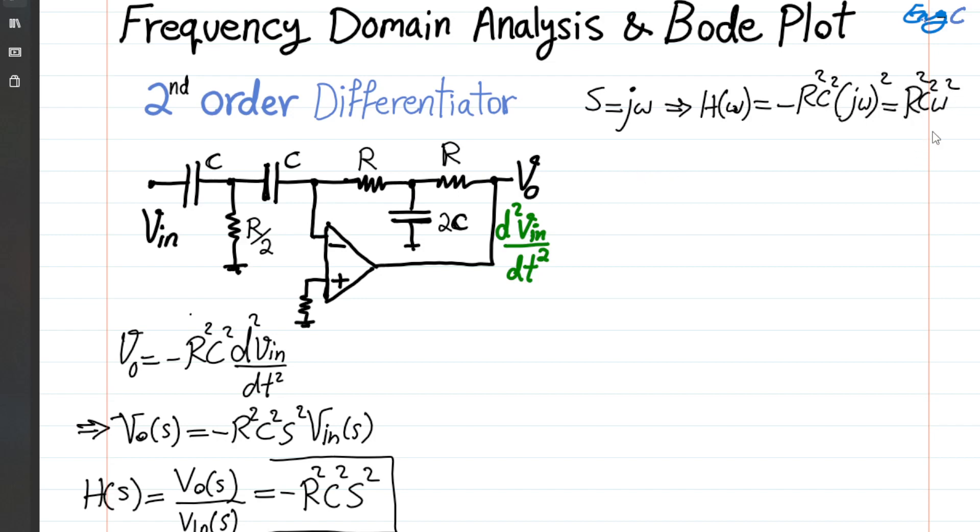Now, it indicates, because it's purely real function, it indicates that the phase of the transfer function, voltage transfer function H, phase of H of ω is simply zero radian or degree. So we're not going to talk about that.